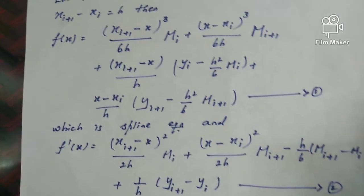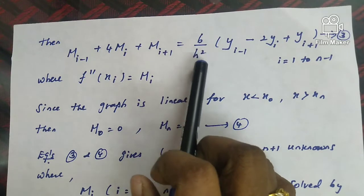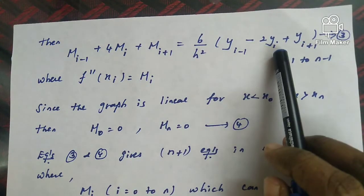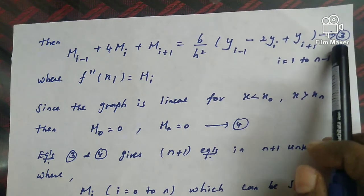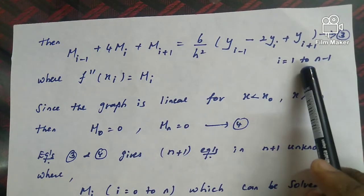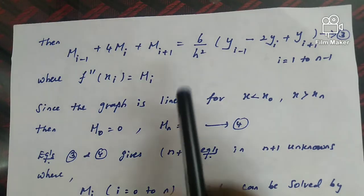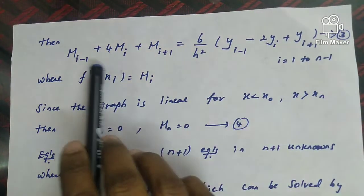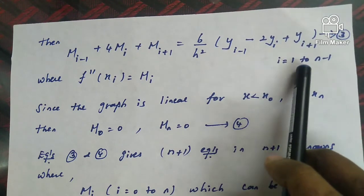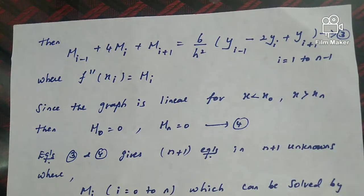After writing f(x) and simplifying, we arrive at the key equation: m_{i-1} + 4m_i + m_{i+1} = (6/h²)(y_{i-1} - 2y_i + y_{i+1}), called equation 3, where f''(x_i) = m_i and i takes values from 1 to n-1. This is a very important result under cubic spline.